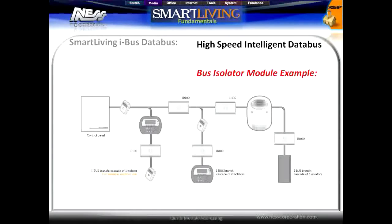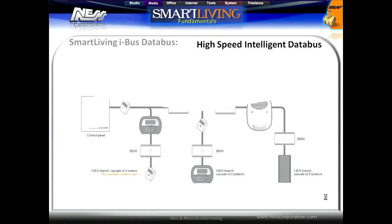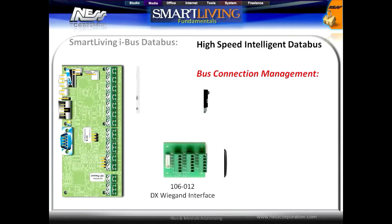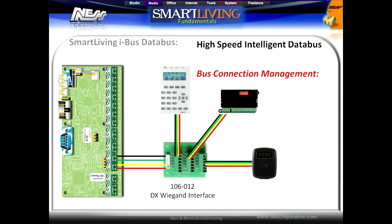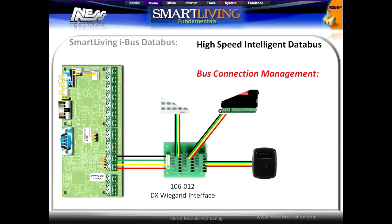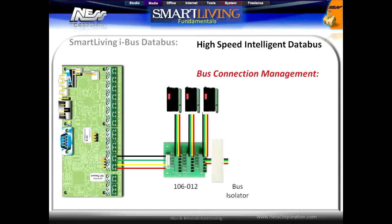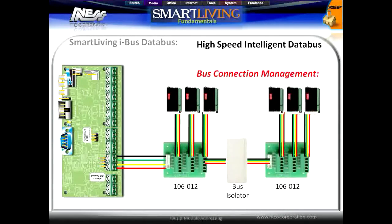Here is an example of how data bus isolators can isolate the modules on the bus. Data cabling can be managed in any way the installer chooses. Cables can simply be connected directly to the main port on board, or using a device such as our 106012 Wigan interface, parallel terminals can be used to connect multiple cables to a single input. Combinations of modules and data bus isolators can be used to expand the system further.